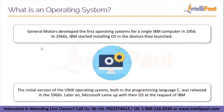Nowadays we have operating systems that help us interact with computer hardware. The initial version of the UNIX operating system was built on the programming language C and was released in the 1960s. Later on, Microsoft came up with their own OS — Windows — which was made on request from IBM, that is International Business Machines.